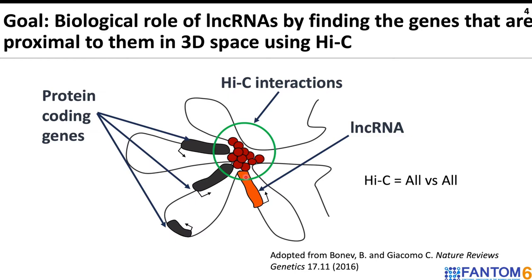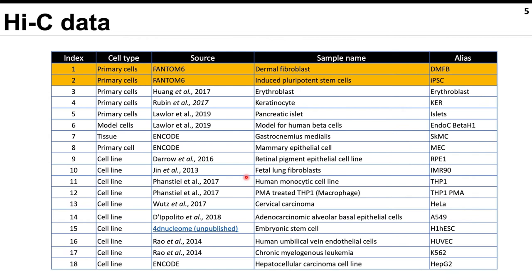If you are not aware of the Hi-C method, basically it is a technique to identify all the genomic regions that are interacting with each other in a selected cell type. To start the analysis, we have uniformly processed deep-sequenced Hi-C data for different cell types, which include in-house data generated for IPS and dermal fibroblasts, together with data from ENCODE and other individual studies. Once we identified the significant interactions, we mapped the expressed promoters identified using FANTOM CAGE data to obtain the annotated interactions for downstream analysis.